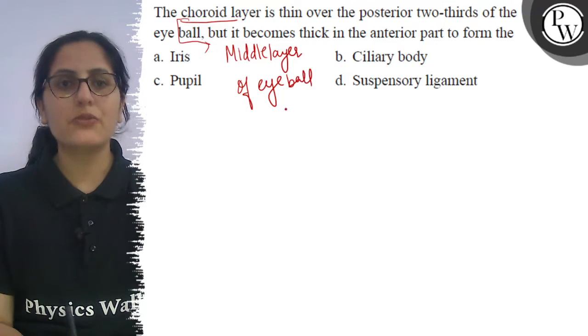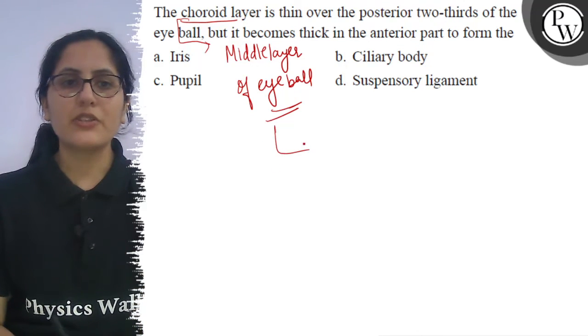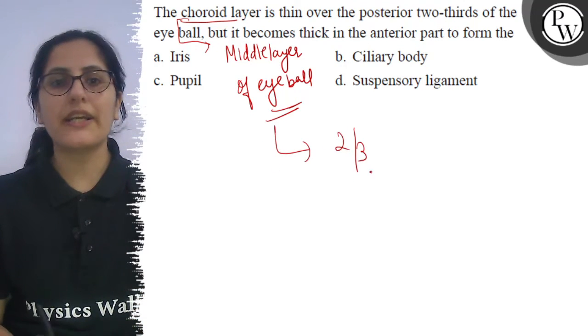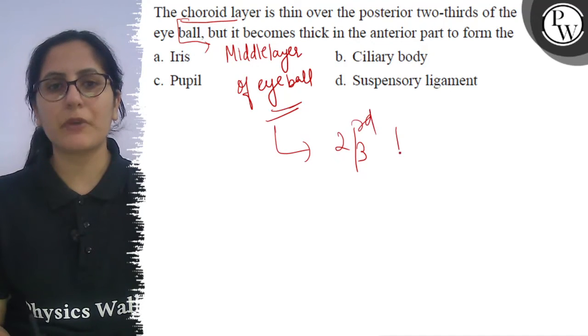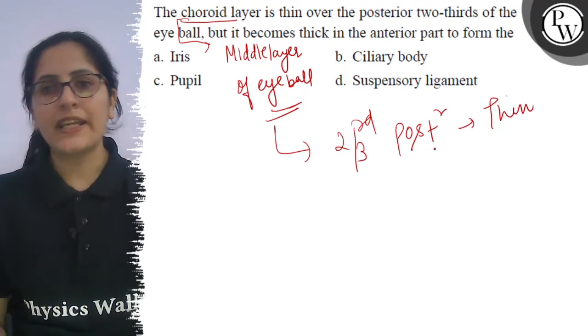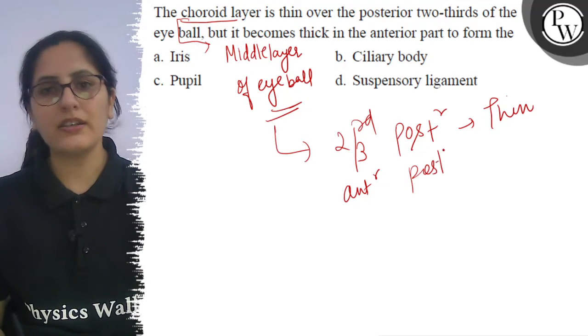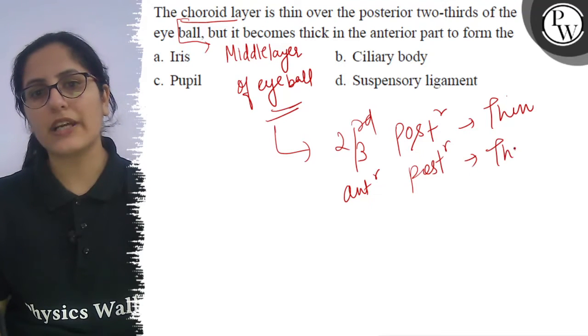There are many blood vessels and it appears bluish in color. This is the two-thirds portion. The two-thirds portion is thin, but the anterior portion is thick.